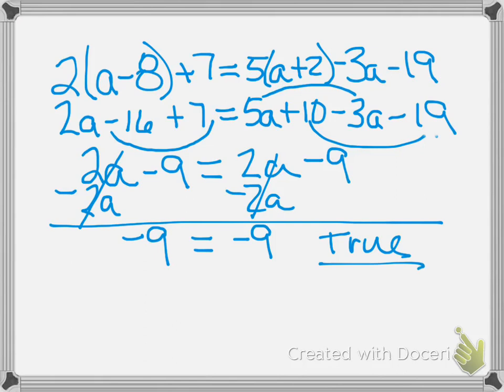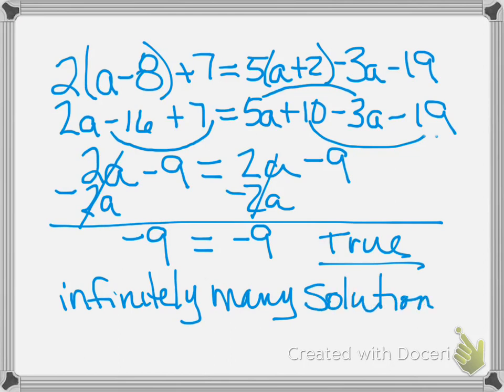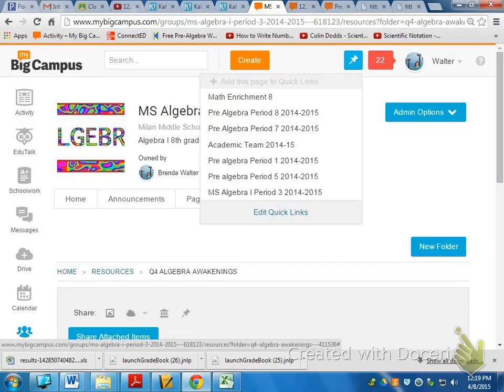When it's true like that, it's not no solution. It is infinitely many solutions, and what that really means is any number you can think of would work in that equation. Every number works, so there's an infinite amount of answers. It's everything, and it's basically because the left side and the right side are identical. A lot of times they say IMS as an abbreviation, and they're looking for variables fall out and answers are equal.